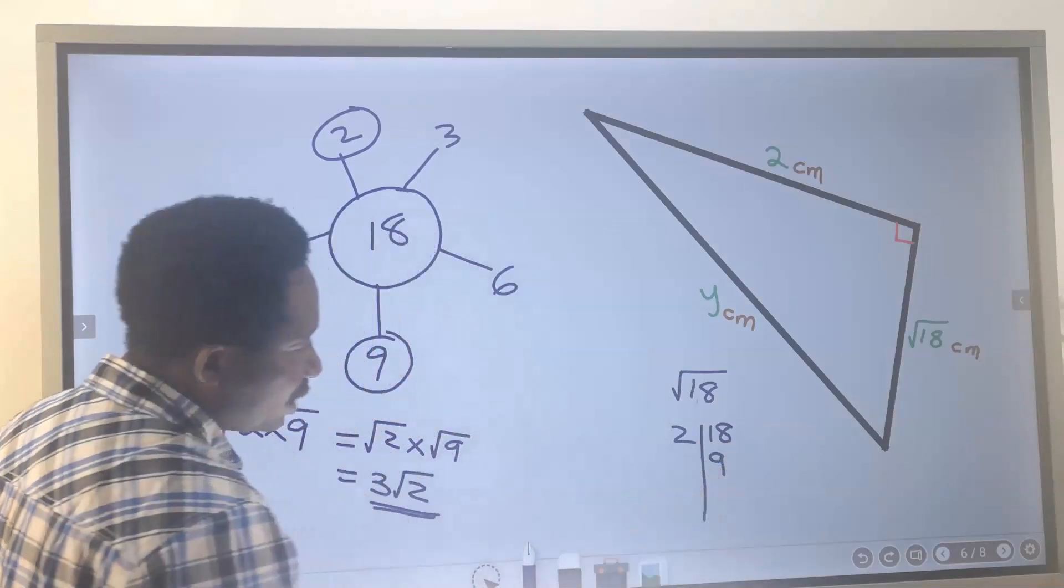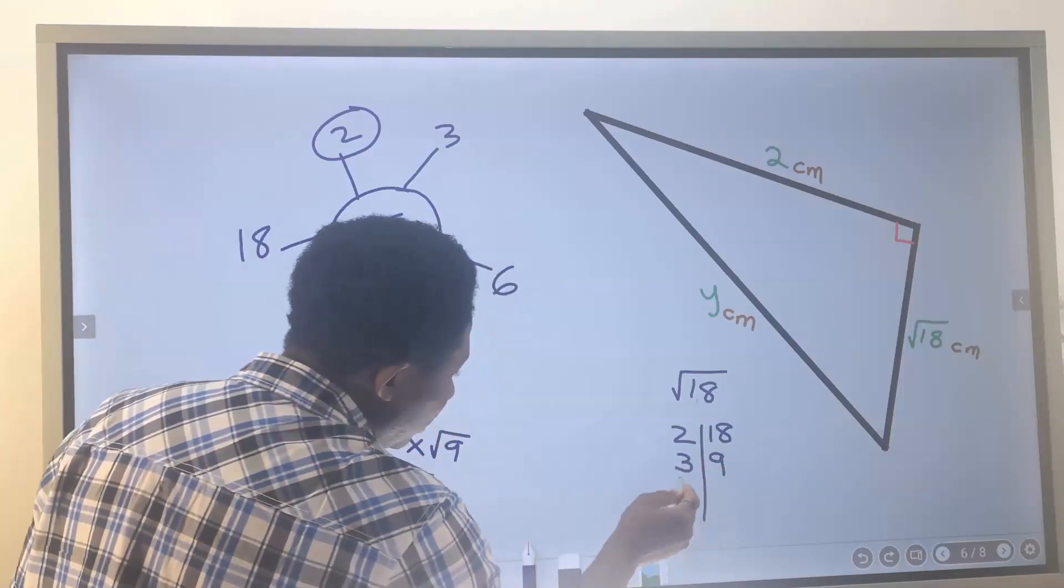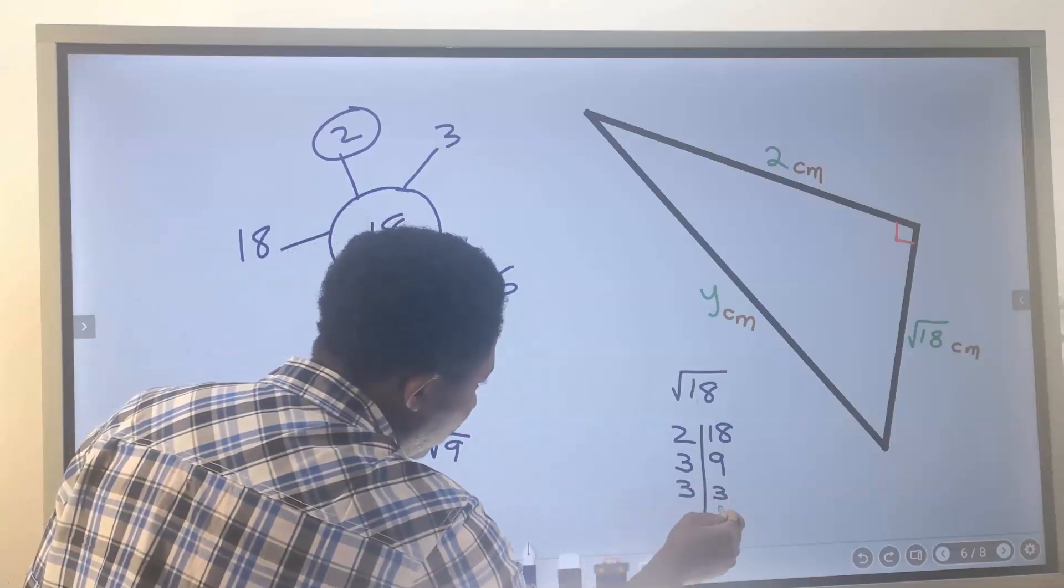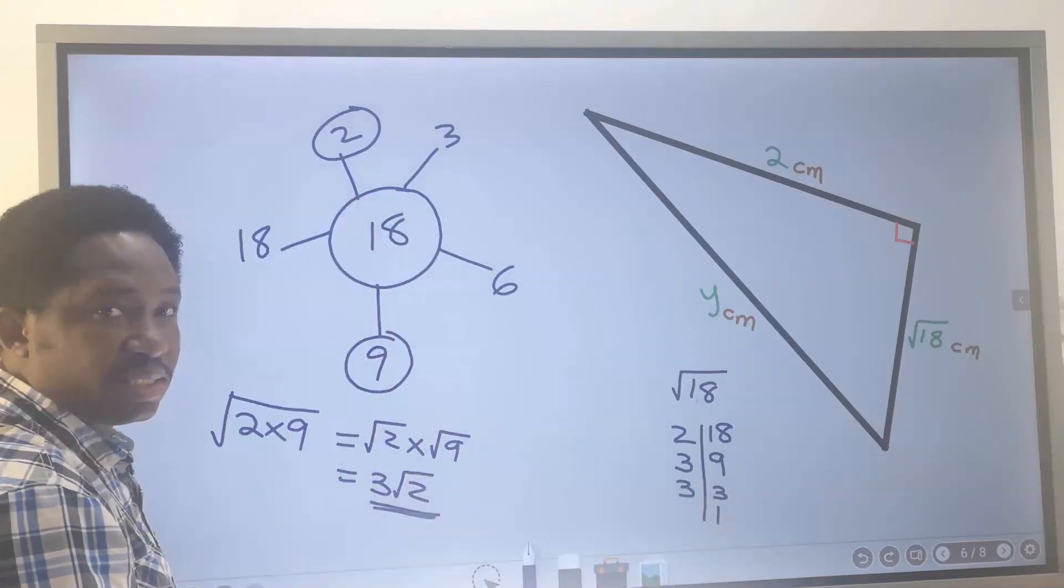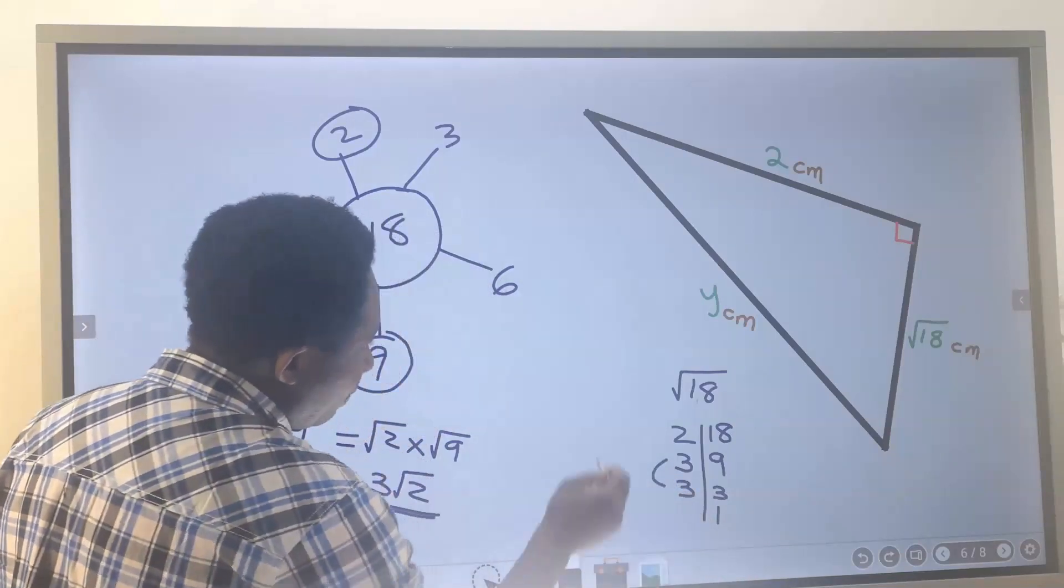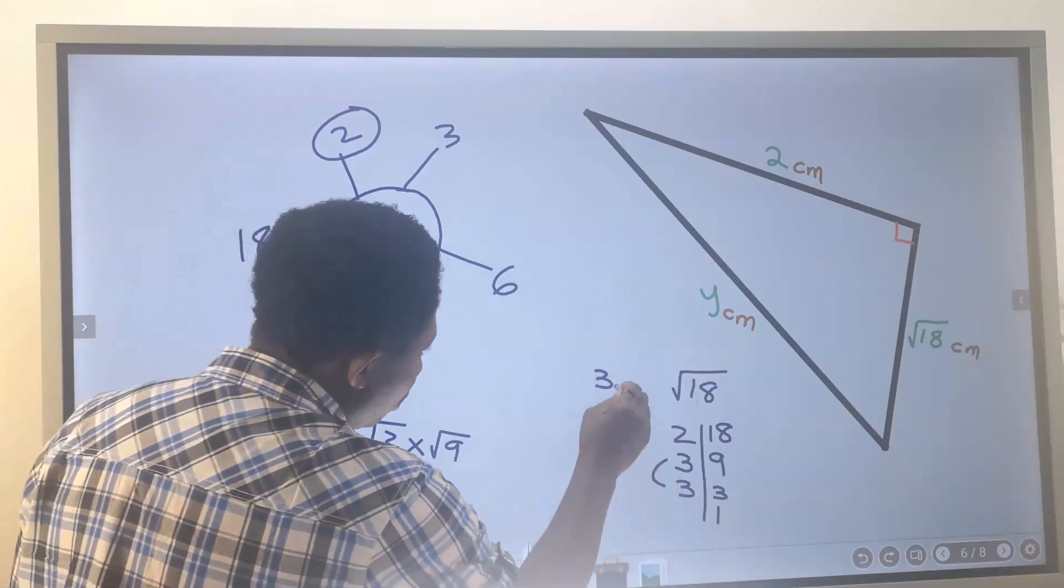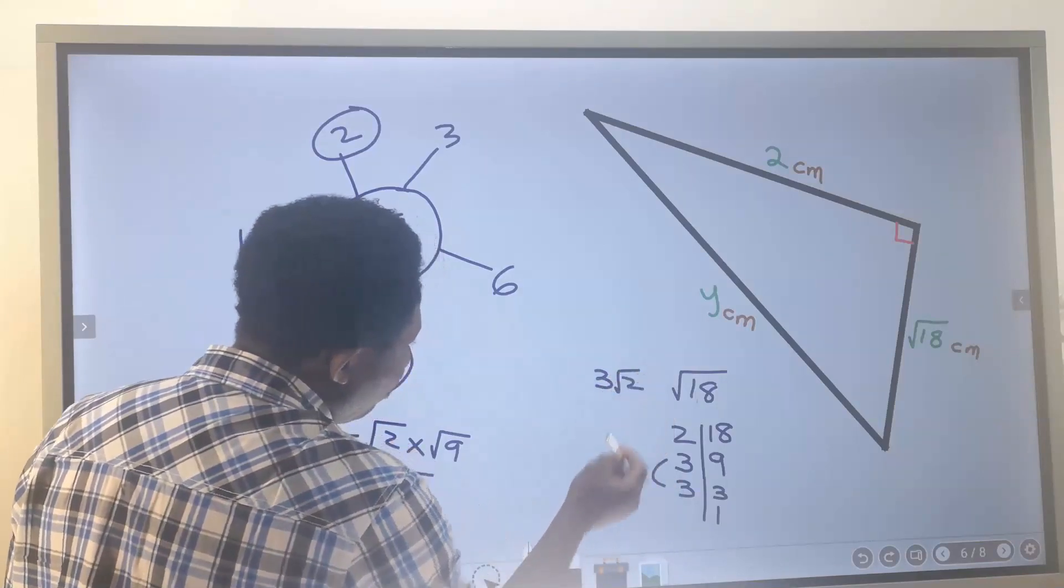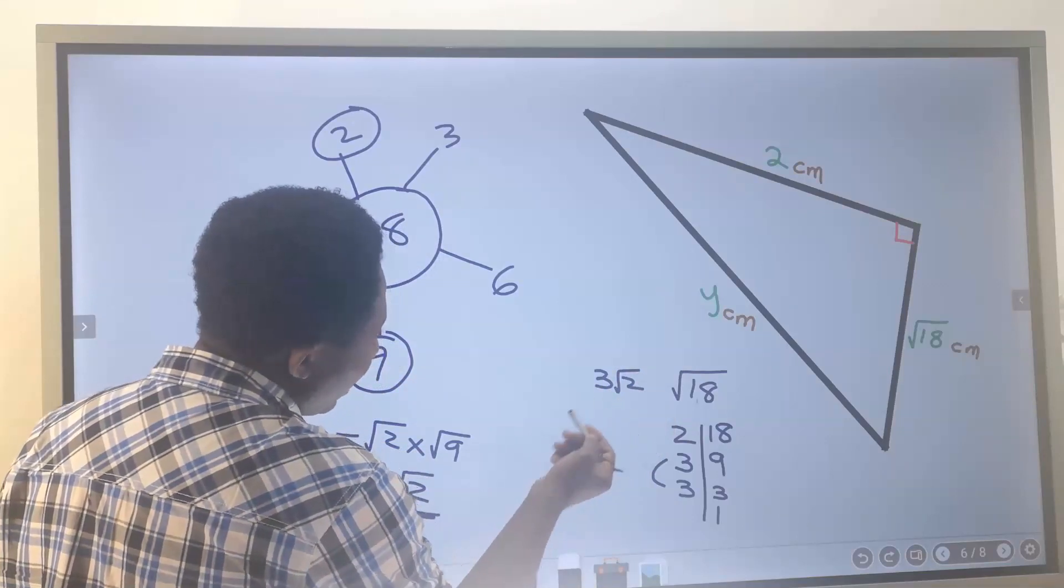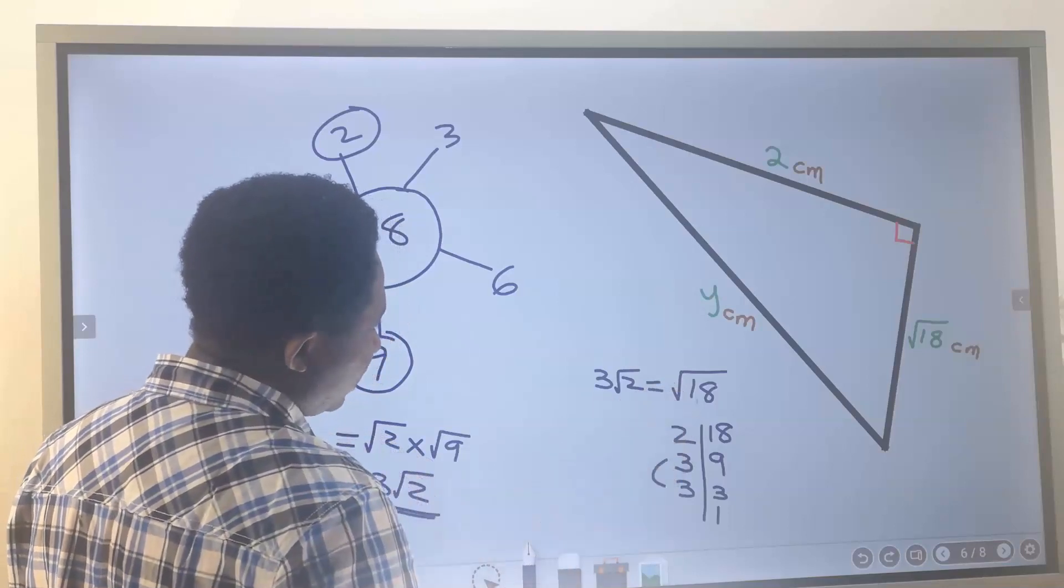2 cannot go into 9 without a remainder. I will go with 3. 3 into 9 is 3, and 3 into 3 is 1. Next, I will pay this 3. 3 got a pay, 3 is 3. 2 got no pay, I will put it inside the square root. 3 multiplied by the square root of 2 will give you the square root of 18.